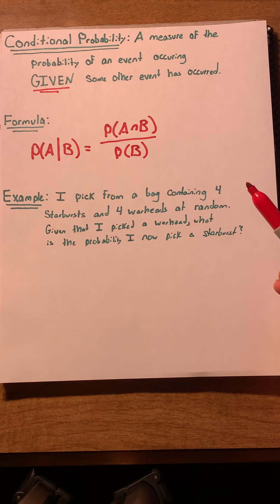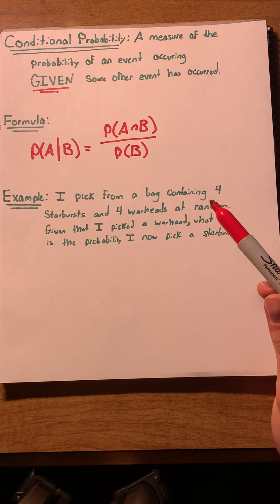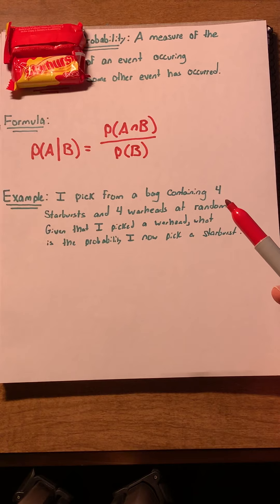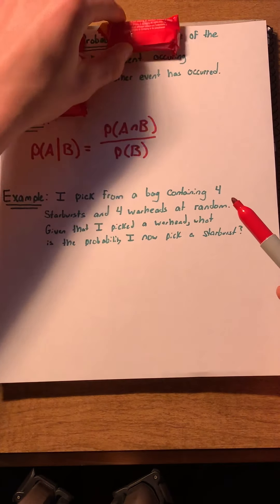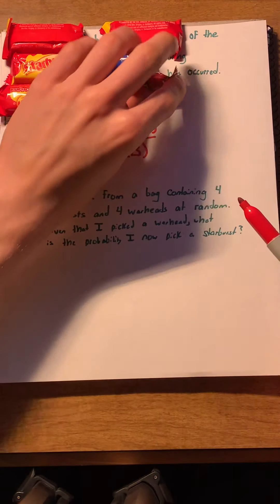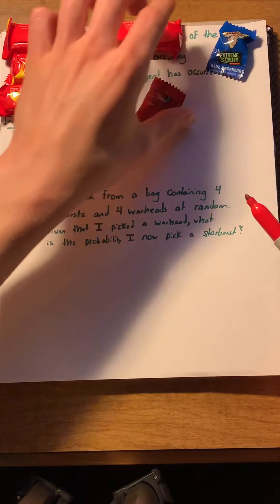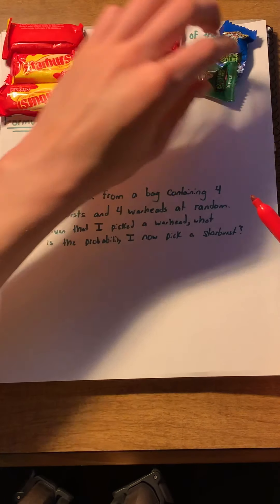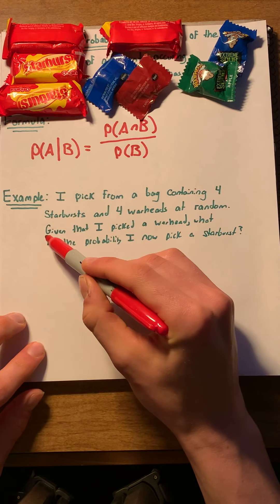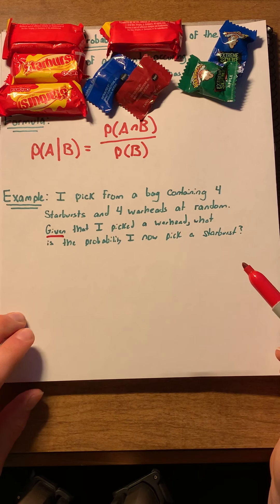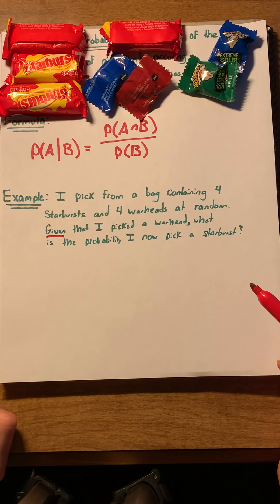And this is really easy to understand when we actually have an example. Let's say that I pick from a bag containing four starbursts and four warheads, and I'm just picking at random. Given that I picked a warhead, what is the probability that I now pick a starburst?